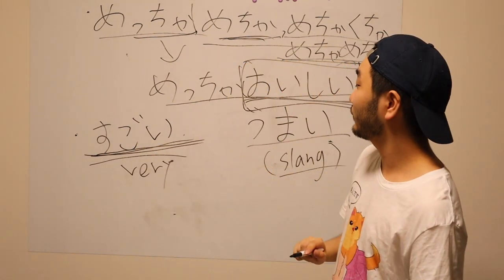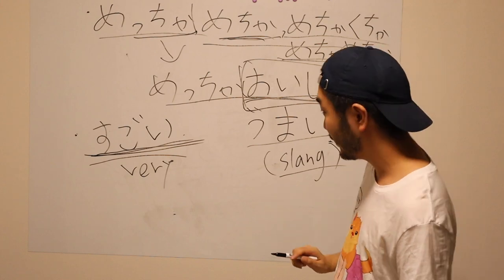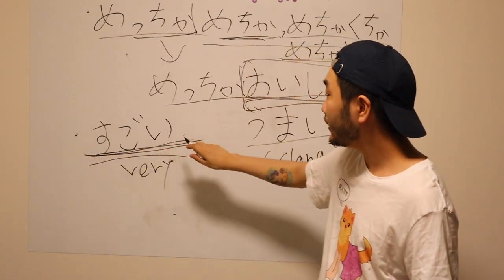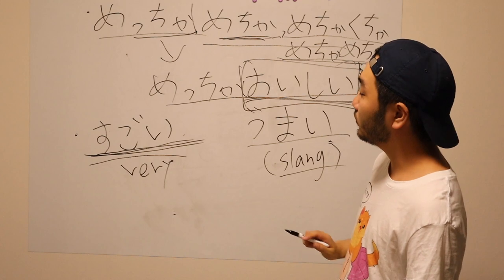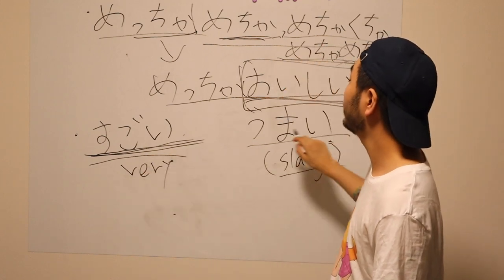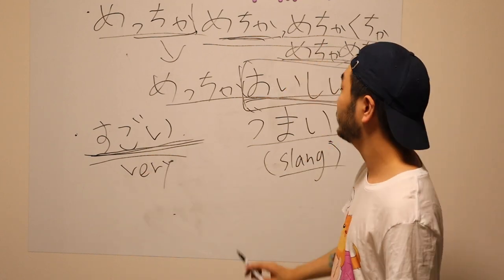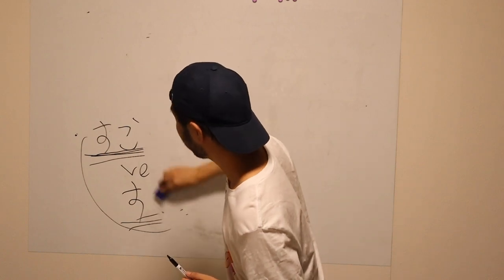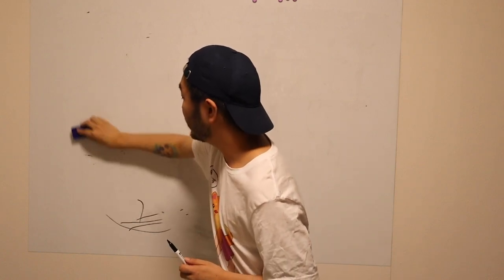Okay, so knowing this. If you wanna say it's very tasty, you can say, Sugoi oishii. Sugoi. Sugoi. Umae. Sugoi. Umae. And, last but not least.